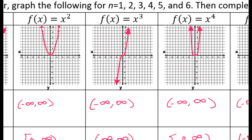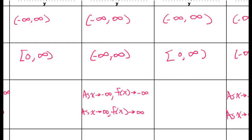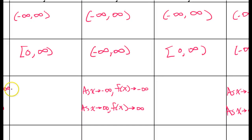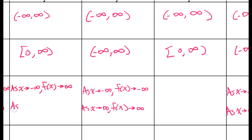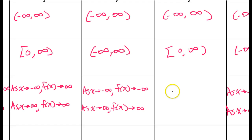So for even degree functions, the end behavior is: as x approaches negative infinity, f(x) approaches positive infinity — meaning on the left it rises. And as x approaches positive infinity, f(x) again approaches positive infinity — meaning on the right it rises. I'll duplicate this for the other even degree functions.